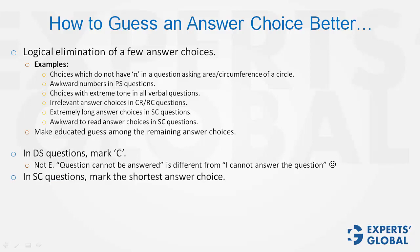Next, in sentence correction questions, mark the shortest answer choice. It has a slightly higher probability of being correct. Same with RC and CR - go for the longest answer choice.